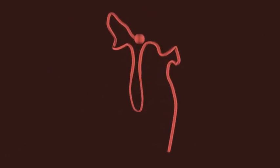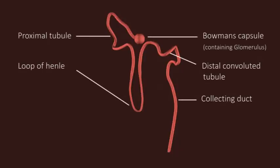This shows the renal corpuscle and the extending tubule. The Bowman's capsule is a cup-like structure which surrounds the glomerulus, a network of blood vessels.